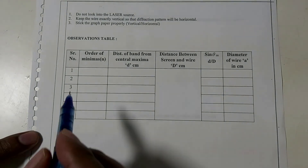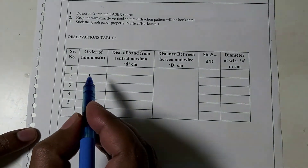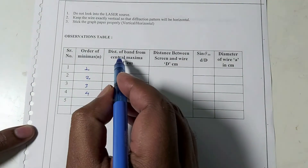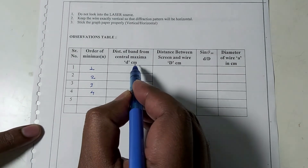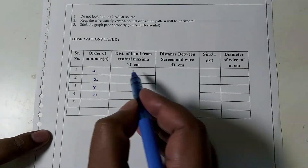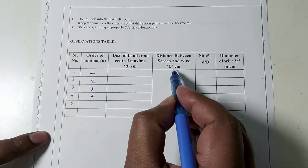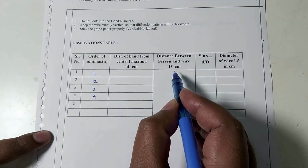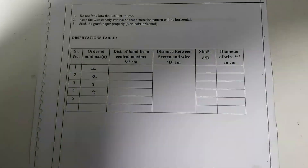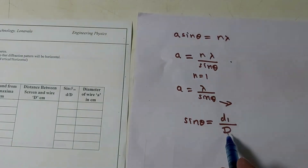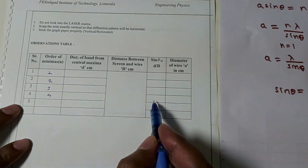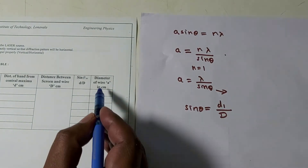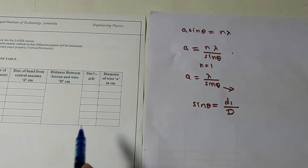Now we will understand the observation table. Serial number, order of minima n (1, 2, 3, 4...), distance of band from central maxima — small d in centimeters — and distance between screen and wire — capital D in centimeters, which is common for all readings. Using sinθ = d1/D we can find sinθ for different values of small d, and using a = λ/sinθ we can find the diameter of the given wire, then take the average.